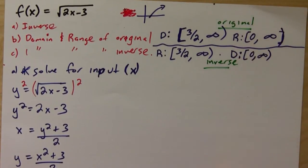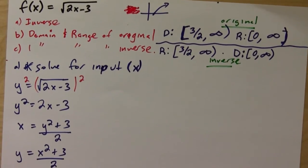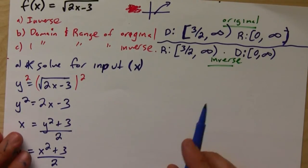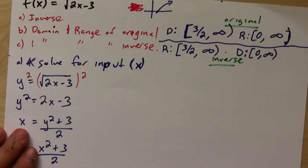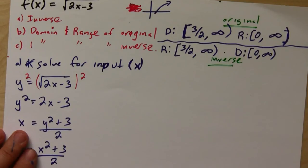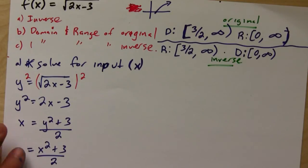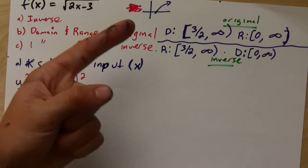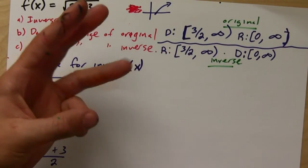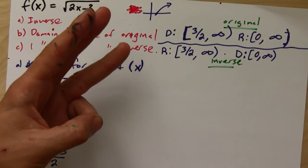That's it for inverse functions. This is how you find the inverse for any function: step one, solve for X; step two, switch X's with Y's; step three, change the notation. And that's it.